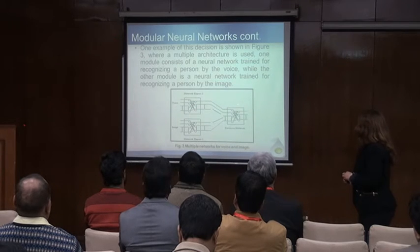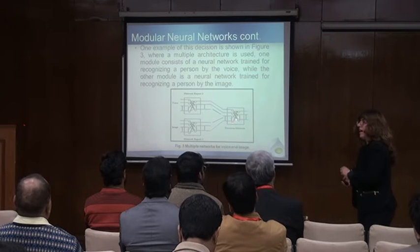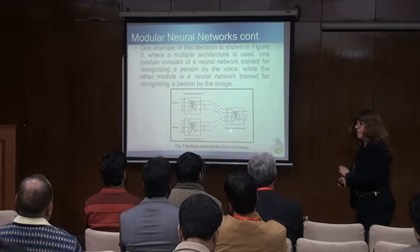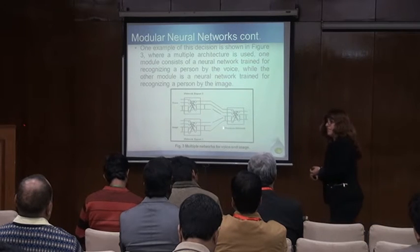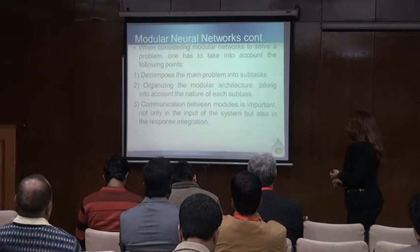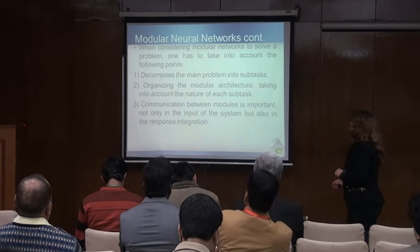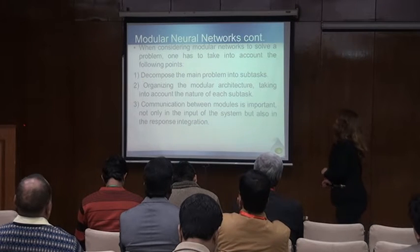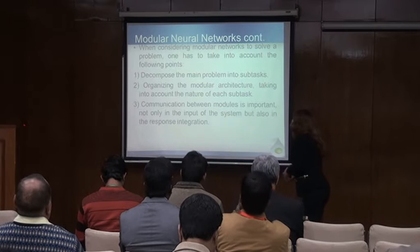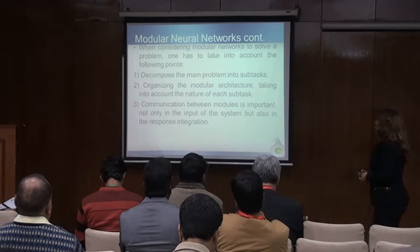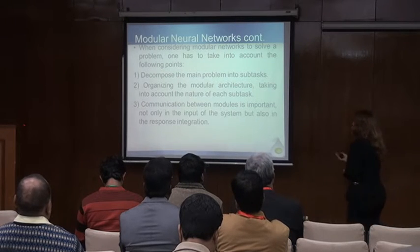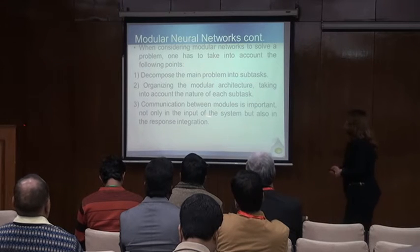But if this is not a network — for example, a fuzzy system — we can now construct a hybrid intelligent system, because we can combine a neural network and a fuzzy intelligent system. The problem that arises is: how can we decompose the main problem into sub-tasks, organize the modular architecture accounting for the nature of these sub-tasks, and manage the communication between modules to give their response to the system.